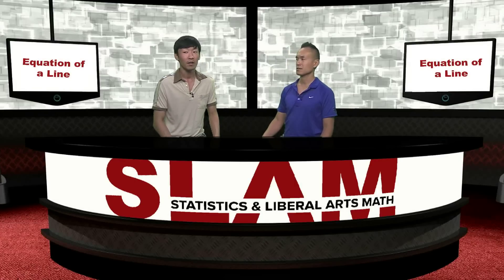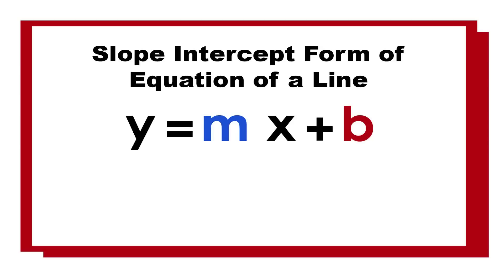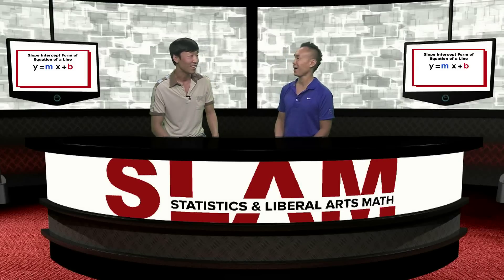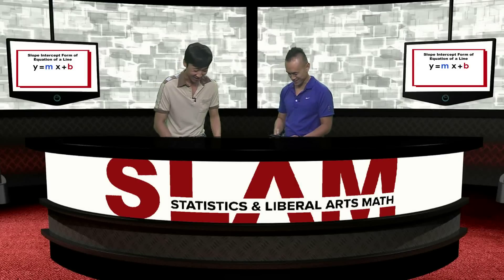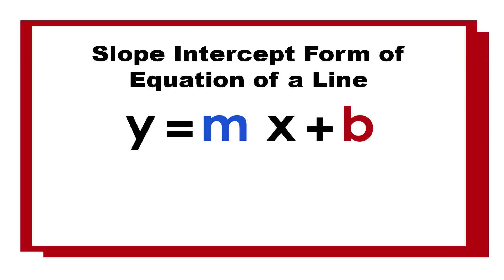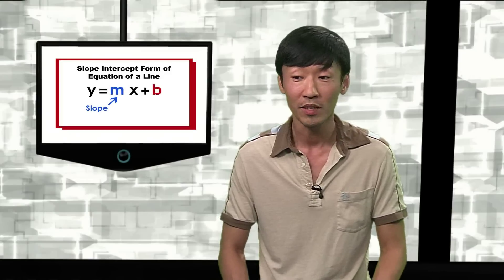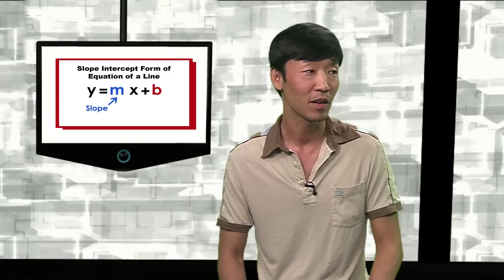Sure. The most commonly used one is y equals mx plus b, which is also called the slope-intercept formula. That's my favorite version. That's my favorite too. Anyway, what is this m and what is this b? m is the slope, and slope represents how rapidly your line goes up or goes down. Sometimes people know it as rise over run.